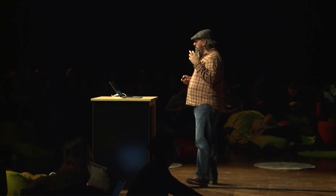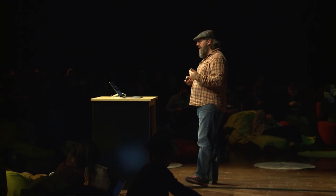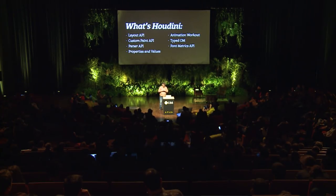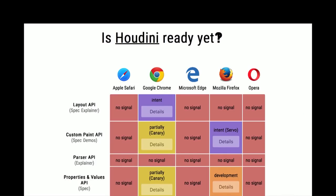The other thing that sounds pretty exciting is Houdini. Houdini is a combination of things — we get a layout API, custom paint API, parser, properties and values — a whole bunch of different things that get us closer to the browser rendering engine. Is Houdini ready yet? Unfortunately, browser support right now is pretty minimal.